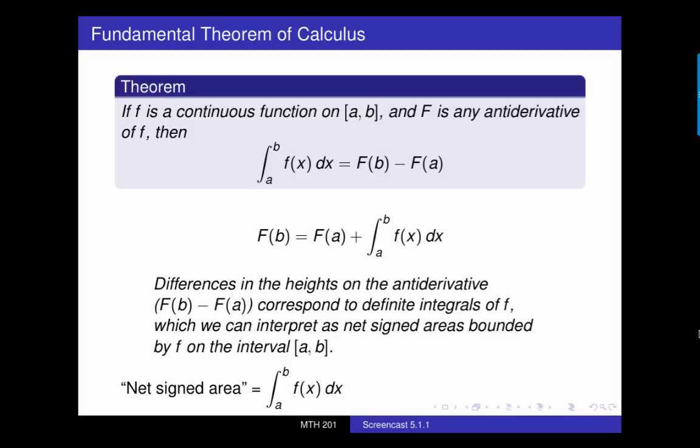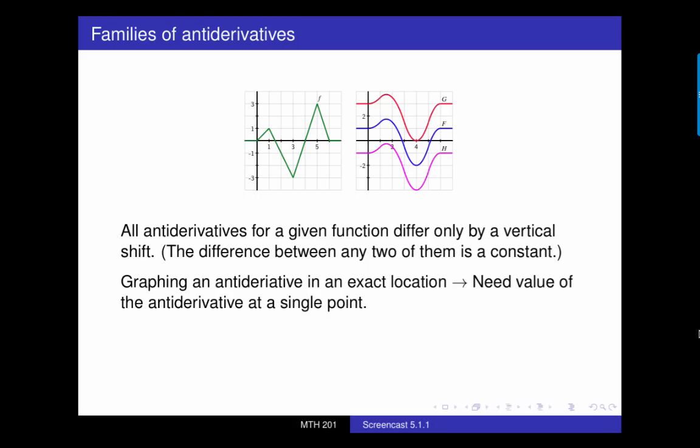Another idea in this section is the notion that there is not just one antiderivative for any given function, but rather a one parameter family of functions that all differ by a vertical shift. In order to know exactly where to put the graph of an antiderivative in the xy plane, therefore we need to know a value of the antiderivative at a single point.